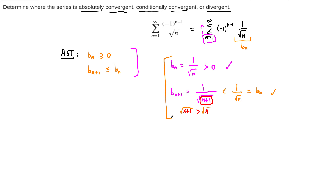For this series, these two criteria are very simple to check — you could argue it's obvious that these two things are true. Even if it's obvious, especially when we're first learning these ideas, we need to show it. So we've shown it, and all of this tells us that the alternating series test does apply.